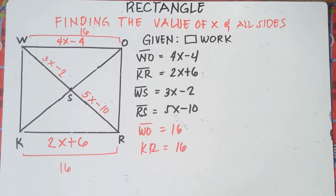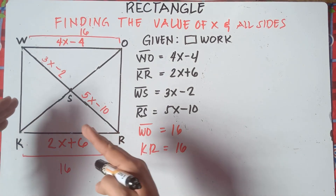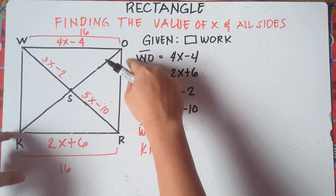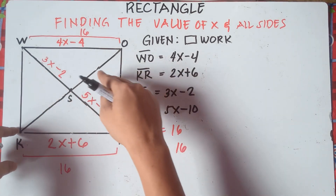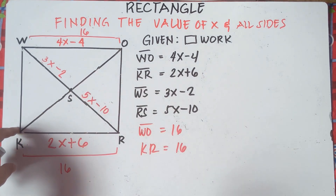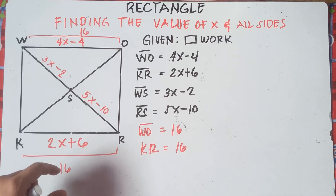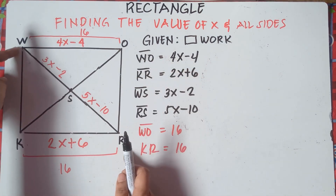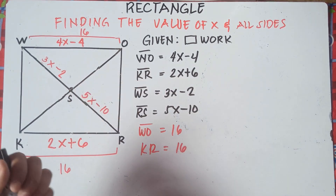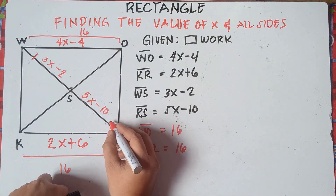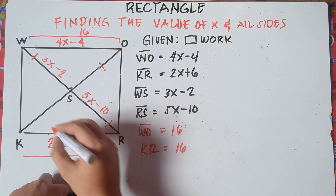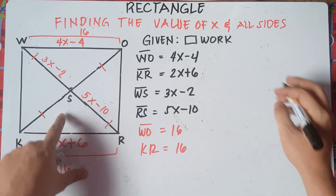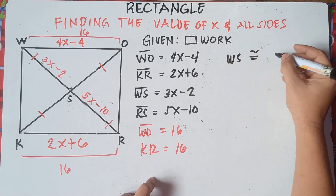According to the properties of a rectangle, the diagonals are equal and they bisect each other. Bisect means they intersect and cut each other into equal halves. So line WS is congruent to line SR, and line OS is congruent to line KS. Therefore, since WS is congruent to SR, we can equate them.